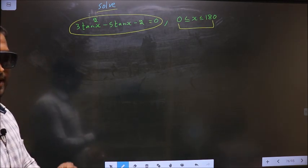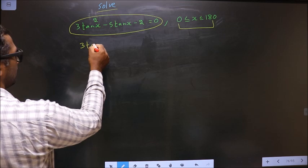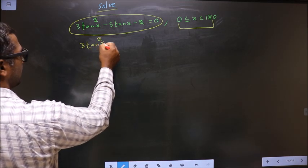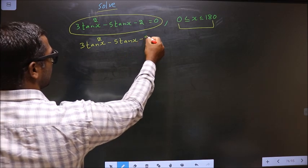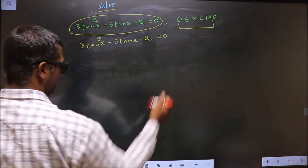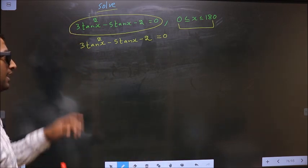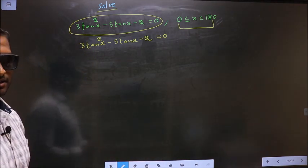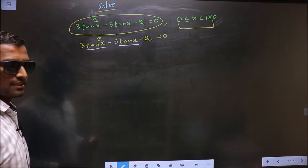First, the given equation is 3 tan squared x minus 5 tan x minus 2 equal to 0. Now in this equation you have tan and also tan squared x.